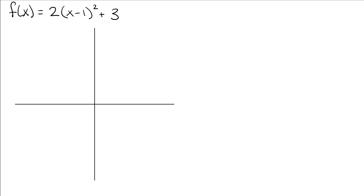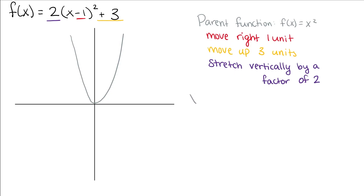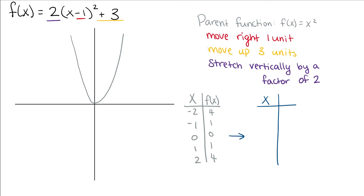Now, given a function, let us draw the indicated function by performing transformations on our parent functions. We have f(x) = 2(x - 1)² + 3. Our parent function is f(x) = x². The minus 1 tied to our x means we move it right one unit. The plus 3 on the end means we move our parent function up three units. The 2 in front means we stretch our function vertically by a factor of 2. Our table of values transforms to: 21, 11, 5, 3, and 5. This is what our given function looks like.